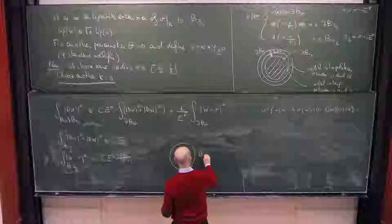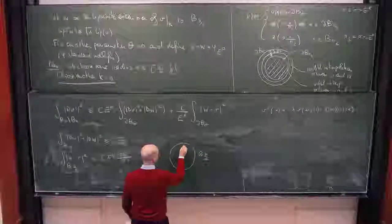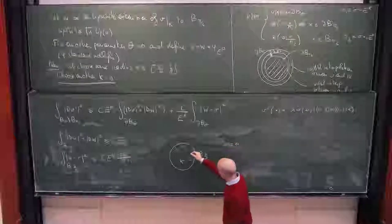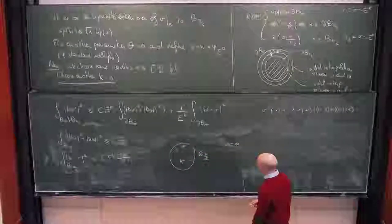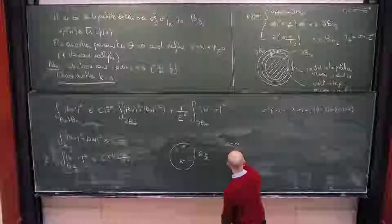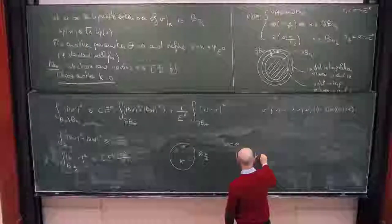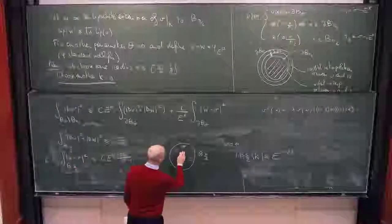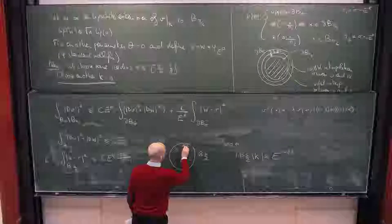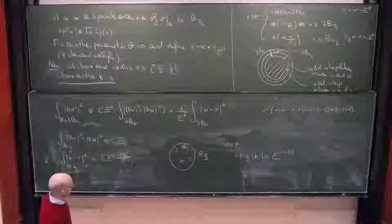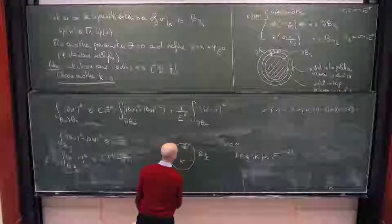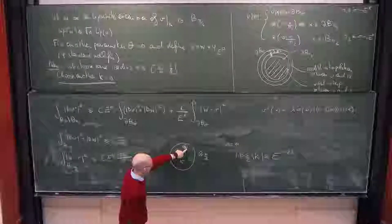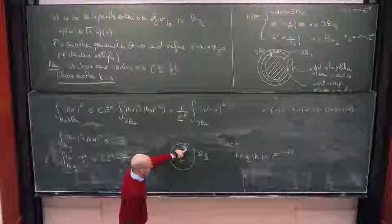On the ball of radius 3/4, there is the set K where V equals W, and the complement where they disagree. The complement set has size bounded by E to the power 1 minus 2 lambda. For every x in the complement of K, the distance between x and K is less or equal than E to the power (1 minus 2 lambda) to the power 1 over n.